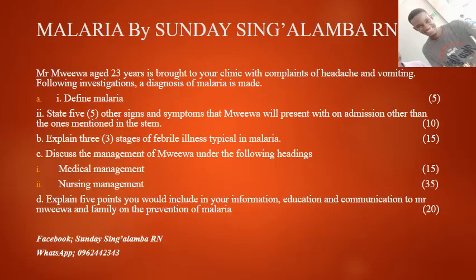Question D says: Explain five points you would include in your information, education, and communication to Mr. Muaywa and family on the prevention of malaria. These include: use of insecticide-treated mosquito nets; environmental modification; use of indoor residual sprays to kill insects; use of mosquito repellents; and wearing of long clothes. Those are the ways through which malaria could be prevented.